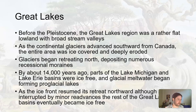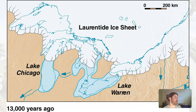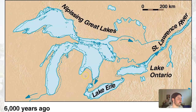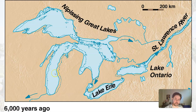As the ice continued to retreat, it continued to expose more of the Great Lakes. About 14,000 years ago the lakes were starting to be exposed — Lake Erie, Lake Michigan. And then as the ice further retreated, what you see in the dashed line — this is still 6,000 years ago — is the current makeup of the Great Lakes. All of those were carved and gouged out initially by those massive glaciers, and then the water just filled them into these deep basins.